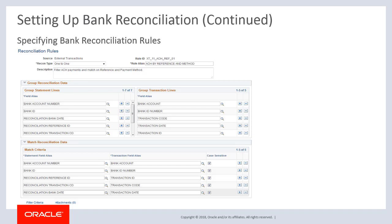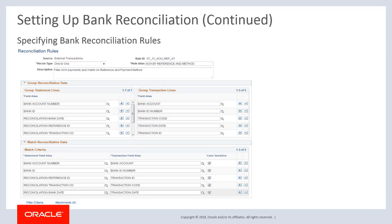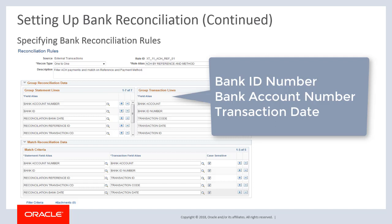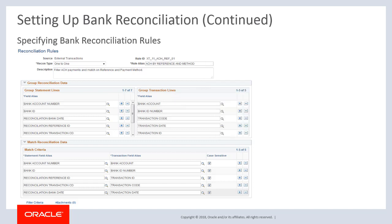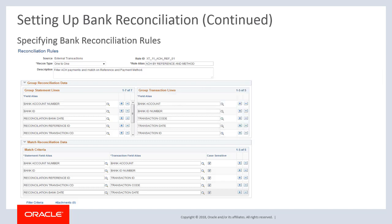When you aggregate transaction lines using the group transaction lines grid, do not include the amount field. For one-to-one and one-to-many rules, include key fields on transaction tables: bank ID number, bank account number, and transaction date. For many-to-one and many-to-many rules, include bank ID, bank account number, and transaction date. You can add additional grouping criteria for each source as needed. Bear in mind that the transaction field alias may vary by reconciliation source.